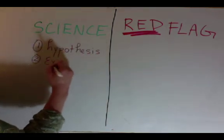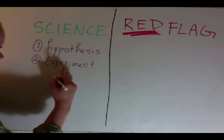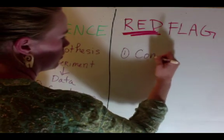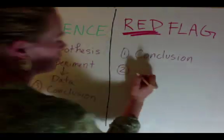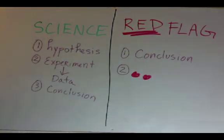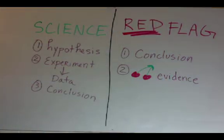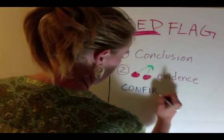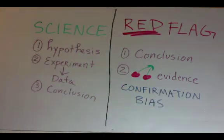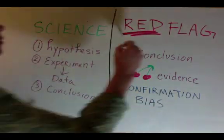Science follows the scientific method, where you begin with a hypothesis and end with a conclusion. Whereas pseudoscience begins with a conclusion, then cherry picks evidence to support it. This confirmation bias is when you dismiss any evidence that does not support your conclusion.